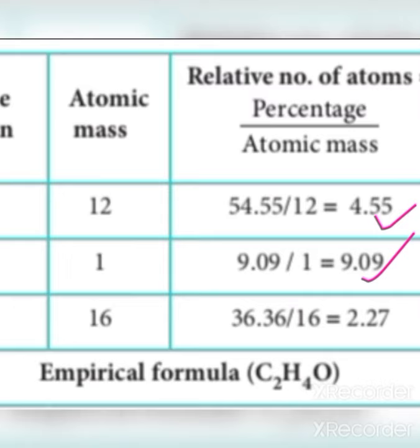Using percentage divided by atomic mass: for oxygen, 36.36 divided by 16 equals 2.27. The lowest number among all elements is 2.27.